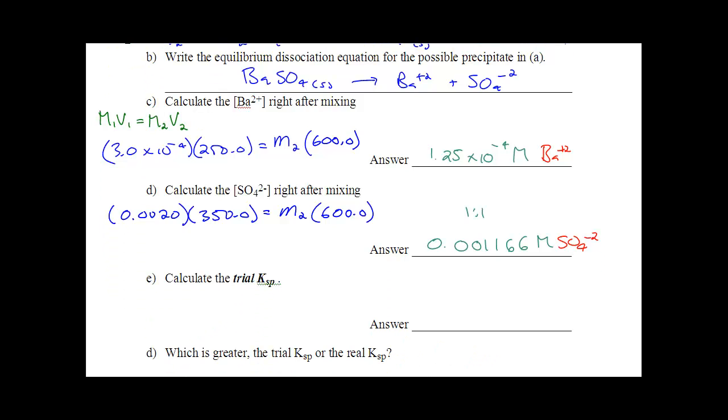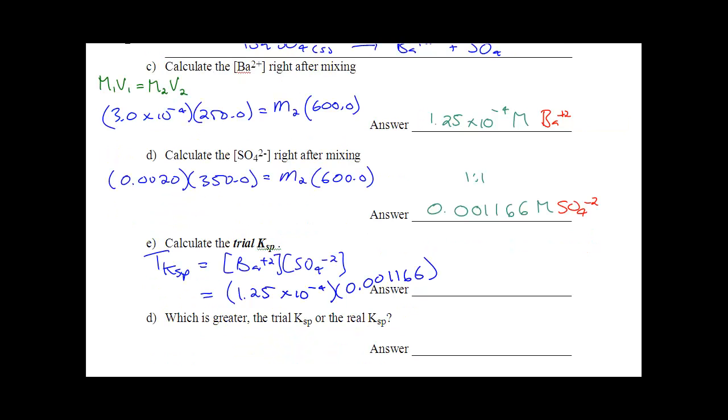We have to write it in the expression. So trial KSP equals square brackets BA plus 2, SO4 minus 2. Concentrations are 1.25 times 10 to the negative 4 times 0.001166, and we are going to get an answer of 1.45 times 10 to the negative 7. There are no units there. That's the trial KSP.